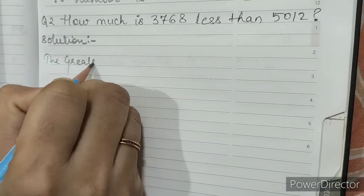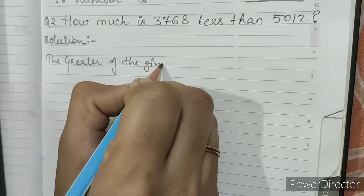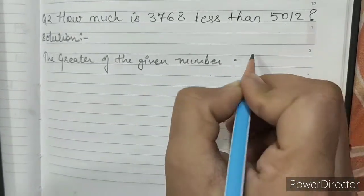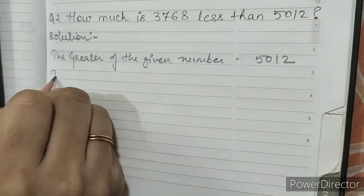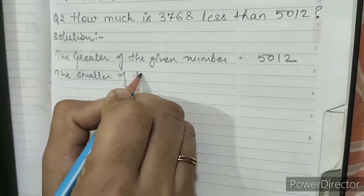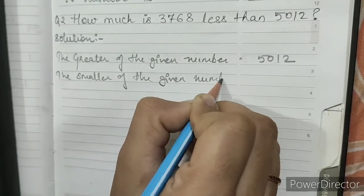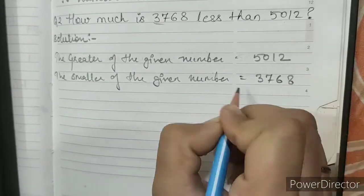The greater of the given number is 5012. The smaller of the given number is 3768.